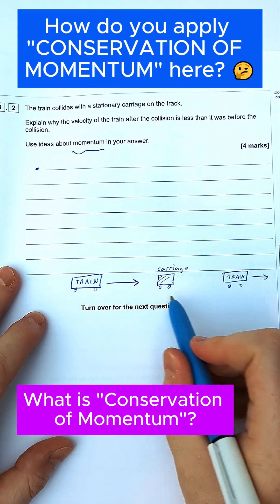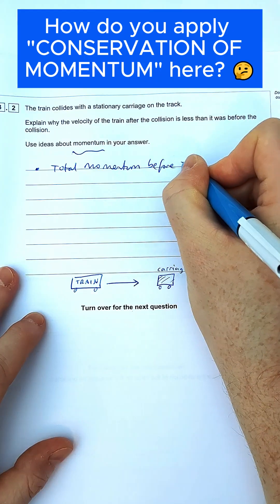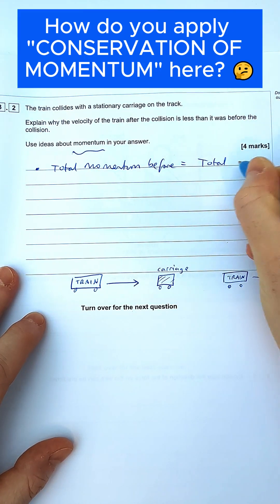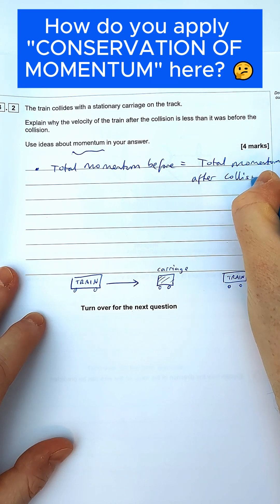The first mark would be to explain what conservation of momentum is. That means the total momentum before is equal to the total momentum after the collision. That's our first mark.